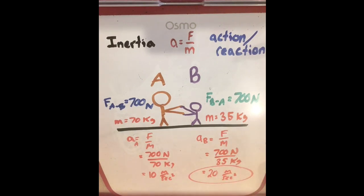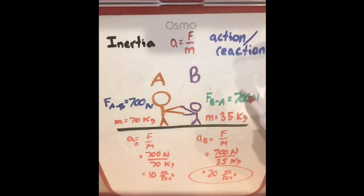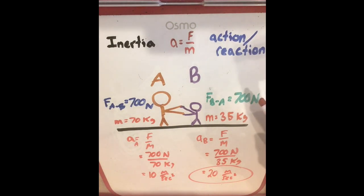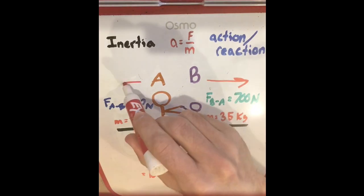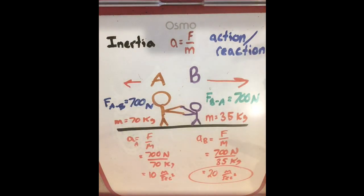Person B is going to have a much larger acceleration, and that makes sense. If you and somebody else push off each other on ice skates, the person with less mass will accelerate away at a higher rate. It's not because anybody is pushing harder — it's because the masses are different, which makes the accelerations different.